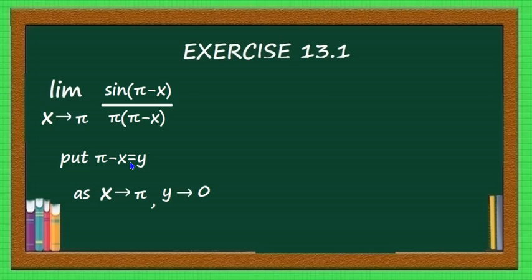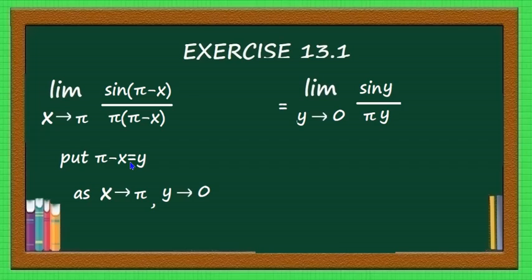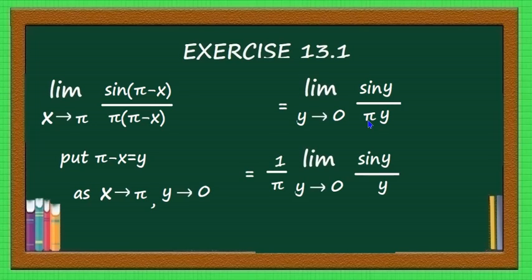Now the limit reduces to: limit y tending to 0 of sin(y) divided by πy, because π - x equals y. Taking 1/π as a constant outside the limit, that equals 1/π times limit y tending to 0 of sin(y)/y. The limit of sin(y)/y as y tends to 0 equals 1. So the result is 1/π times 1, which equals 1/π.